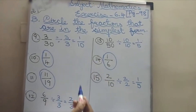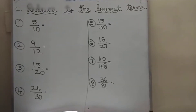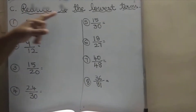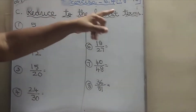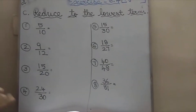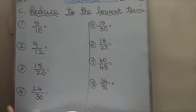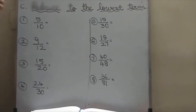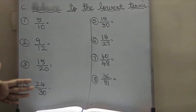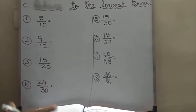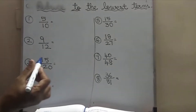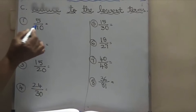Now we will go to the C1. We will see the C1 — reduce to the lowest term. Lowest term and simplest form are everything the same only. Like what we did in the fill-in equivalent fractions, everything is the same. But the method they have given is different, so don't get confused. Same 5 by 10.